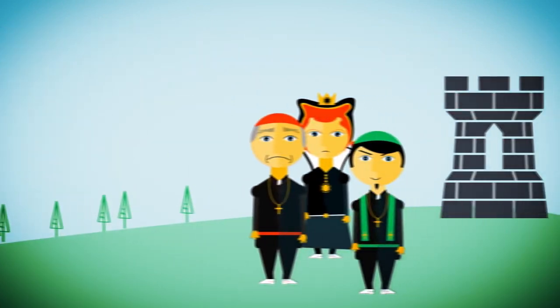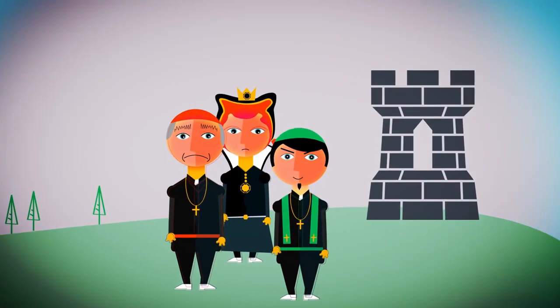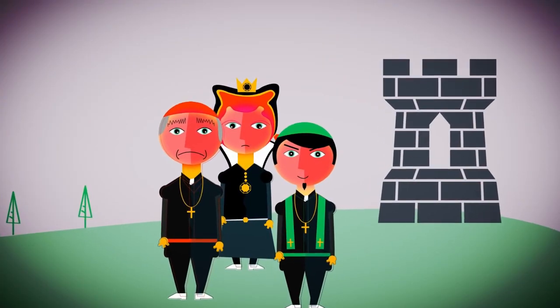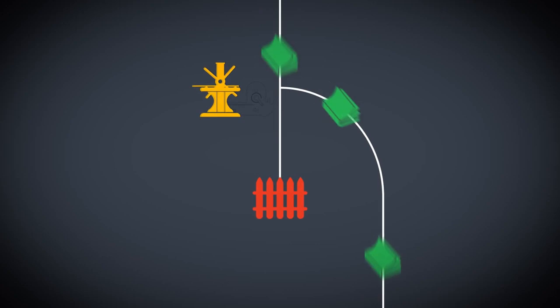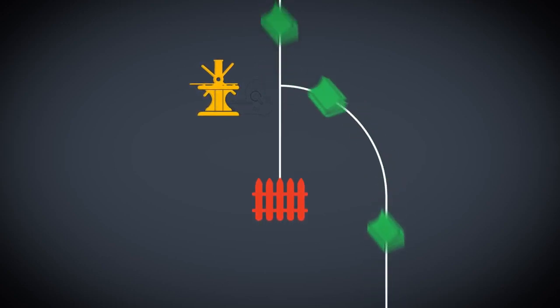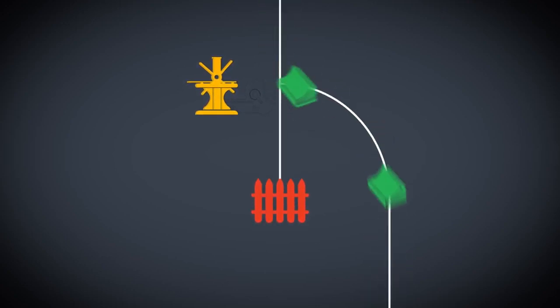Yet, both the state and the church were absolutely furious. Suddenly, they could no longer control what people knew. Works of dissent and criticism were becoming just as circulated as the Bible and any other government approved documents.